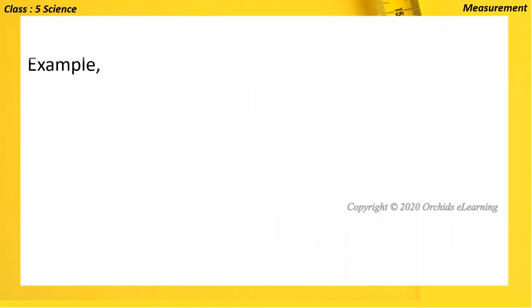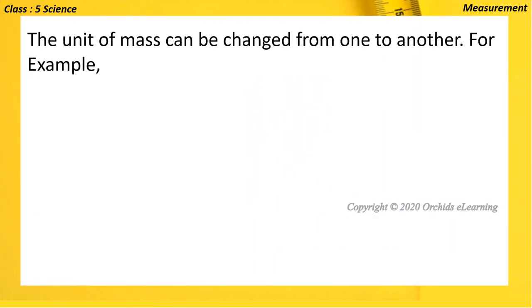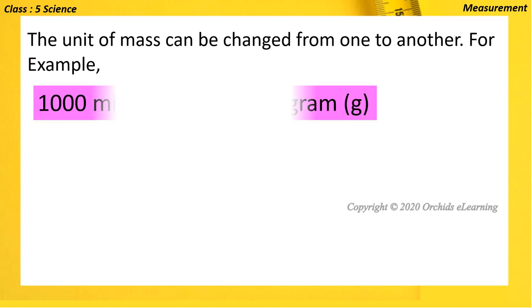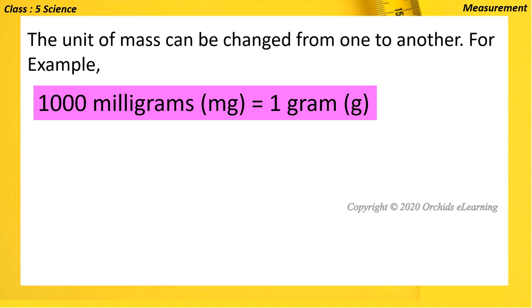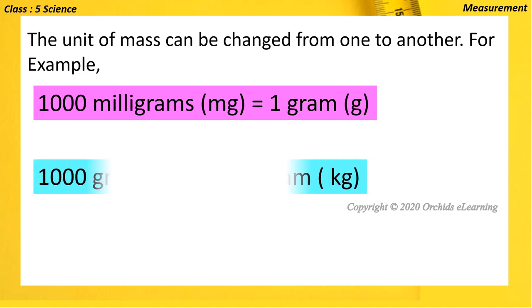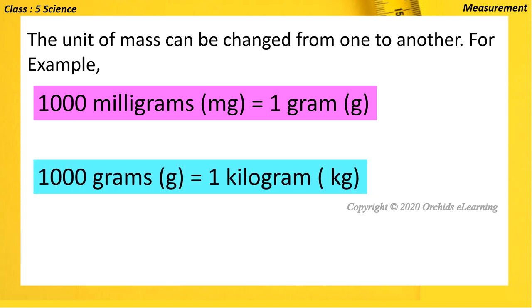The units of mass can be changed from one to another. For example, 1000 milligrams equals 1 gram, and 1000 grams equals 1 kilogram.